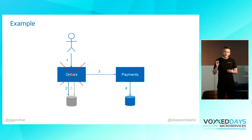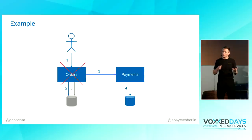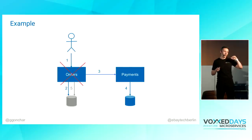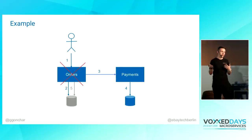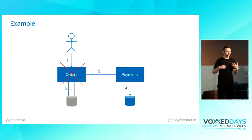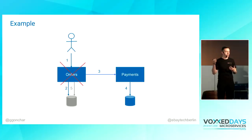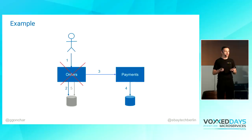Let's get into an e-commerce example. You are the customer placing an order. First, the order service receives your request. Second, we create a record about the initial order receipt. Then we try to charge you — we make a call to the payment service. The customer gets charged, but then something happens — we redeploy the service or it gets restarted — the transaction is gone and we didn't update the order status to confirmed. So this order will never get to the delivery service. This is exactly the scenario where microservices and data consistency create a joint problem where you can lose your data consistency.